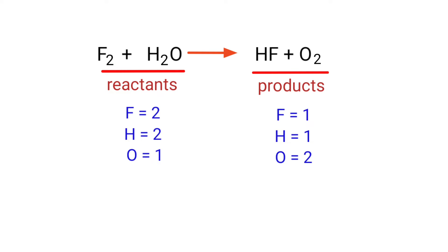In the reactants side there are two fluorine atoms, two hydrogen atoms, and one oxygen atom present. In the products side there are one fluorine atom, one hydrogen atom, and two oxygen atoms present.